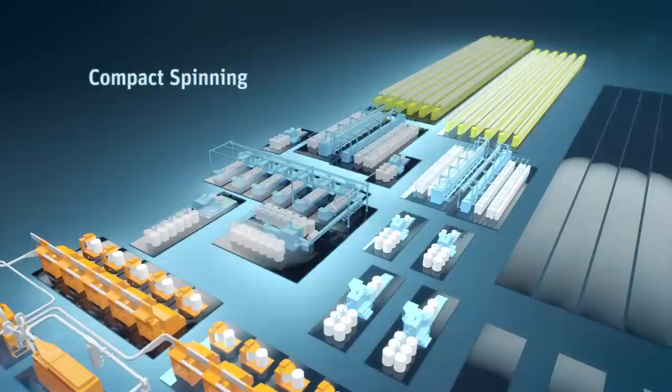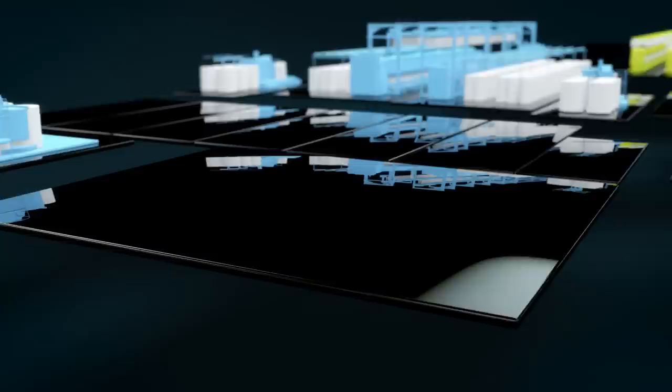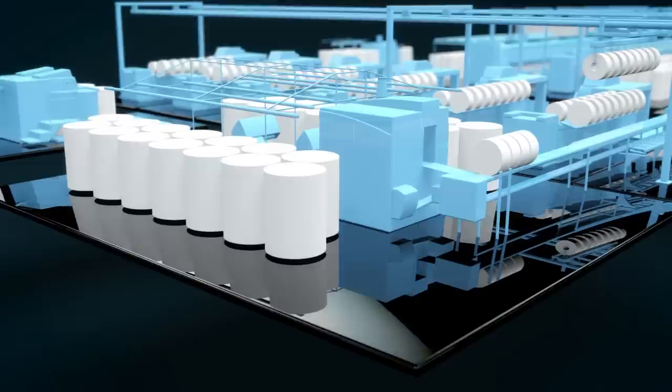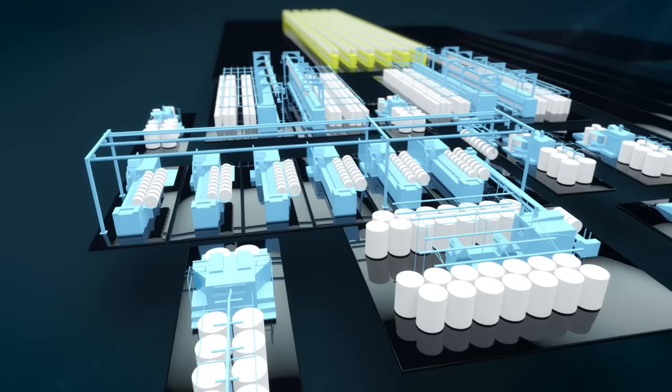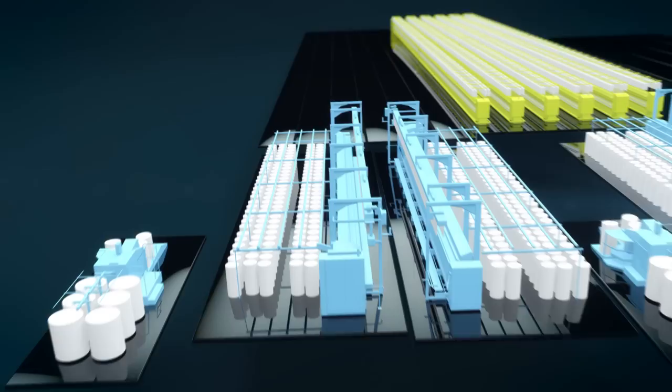Compact yarn is created in a similar way. In most cases, it is additionally combed and thus refined. For the combing process, up to 28 draw frame slivers are combined to form a lap. Short fibers are combed out.